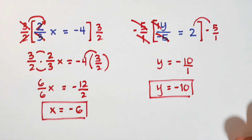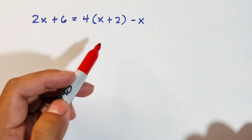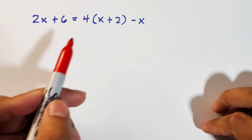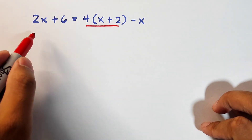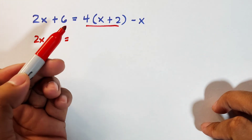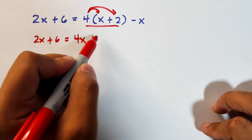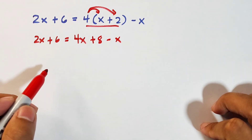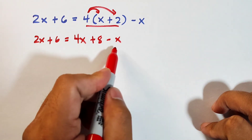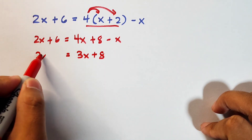Now let's move on with our last example. We have 2x plus 6 is equal to 4 times the quantity x plus 2, minus x. It seems complex, but first what you need to do is deal with the parenthesis. Copy 2x plus 6 is equal to — using the distributive property: 4 times x is 4x, and 4 times 2 is plus 8, minus x. Before simplifying with the left side, combine like terms: 4x minus x equals 3x plus 8. So we have 2x plus 6 on the left side.